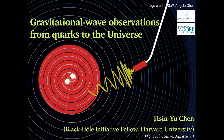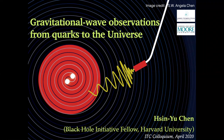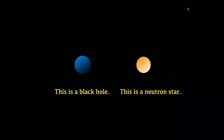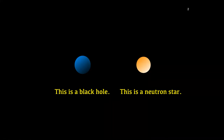Today I'm going to cover several topics related to ground-based gravitational wave observations. Before I start, I would like to define things very clearly, since I'm going to use some cartoons throughout my talk. Whenever you see a blue ball on the left-hand side, that is a black hole. If you see an orange ball on the right-hand side, that is a neutron star. These two types of stars make up all the gravitational wave sources I'm going to cover today.